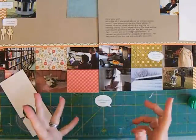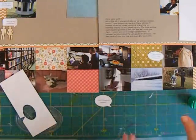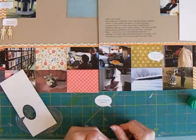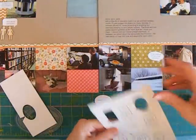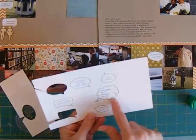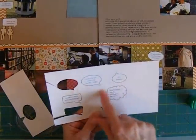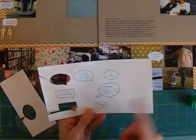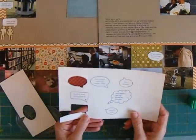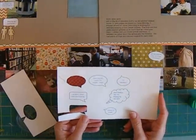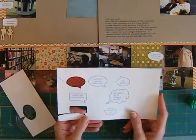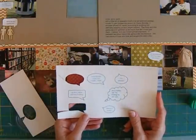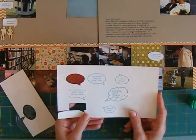Just type up your text, cut around them, and then you can place them on your layout wherever you want. Or you can do them the Microsoft Word way, which gives you a border around the edge, and cut them out that way. Or you can do them with a Cricut or a stamp — lots of different ways to do the speech bubbles.